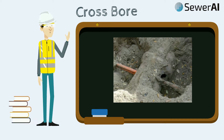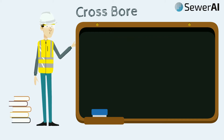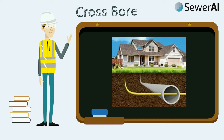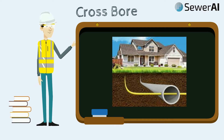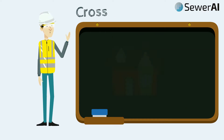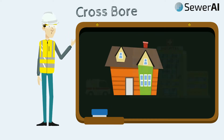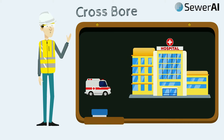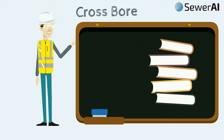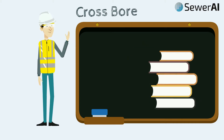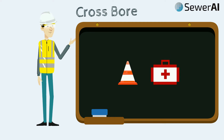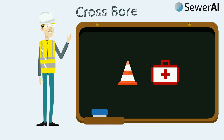One of the primary utilities most at risk for crossbores have been side sewer laterals. In the event of a crossbore of a gas distribution pipe penetrating a side sewer lateral connected to a residence, a hospital, or a school, the threats to community safety are obvious.